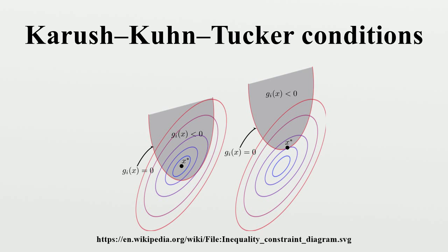Quasi-normality constraint qualification: If the gradients of the active inequality constraints and the gradients of the equality constraints are positive linearly dependent at with associated multipliers for equalities and for inequalities, then there is no sequence such that. Slater condition: